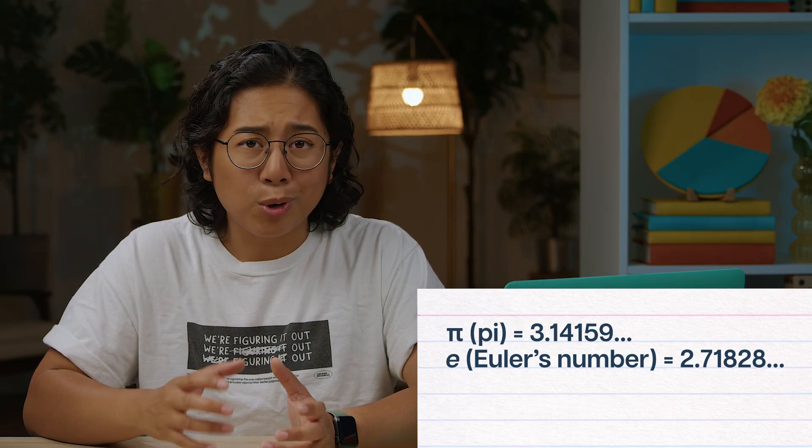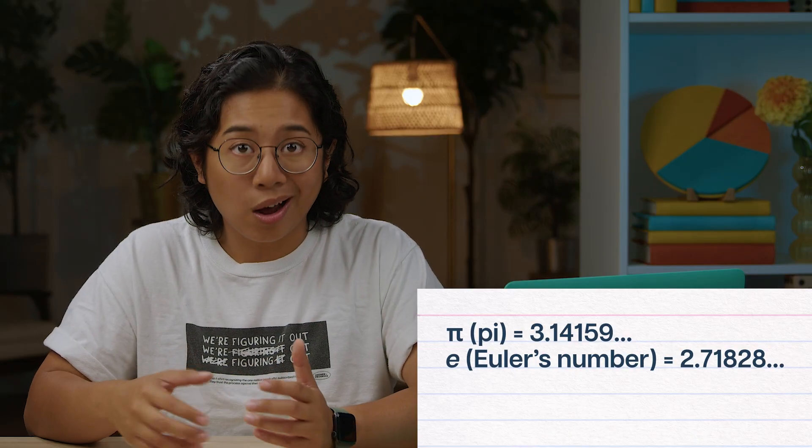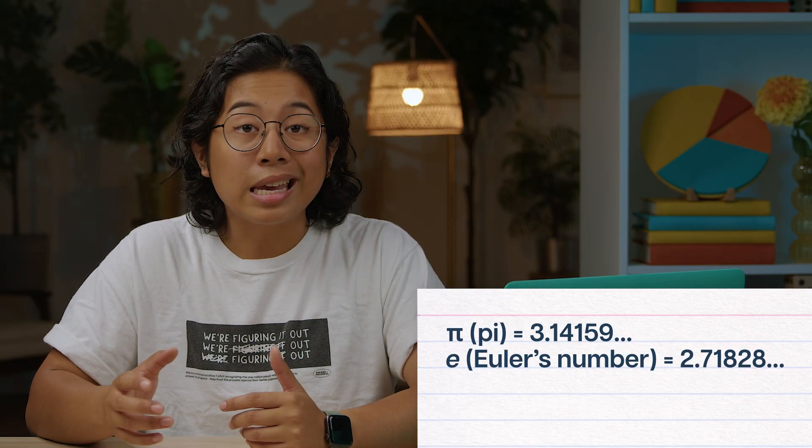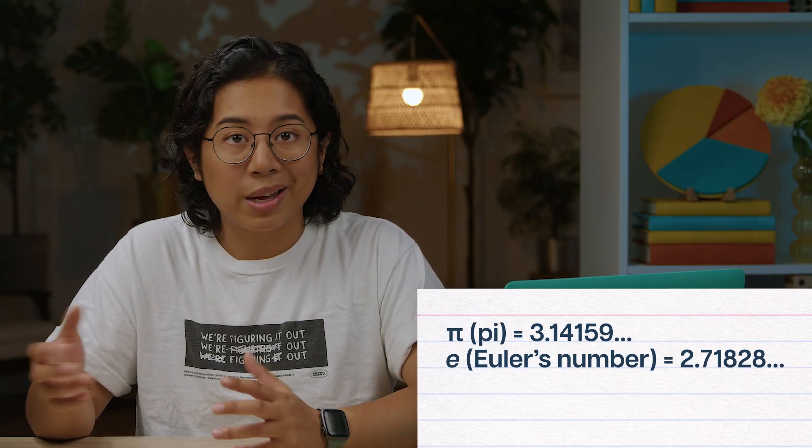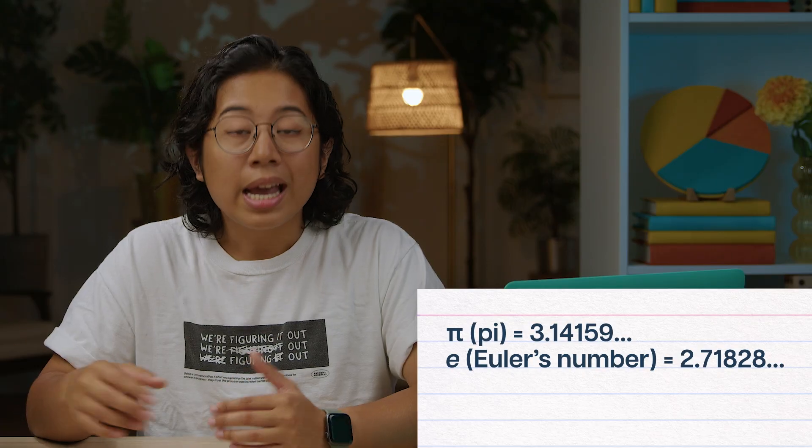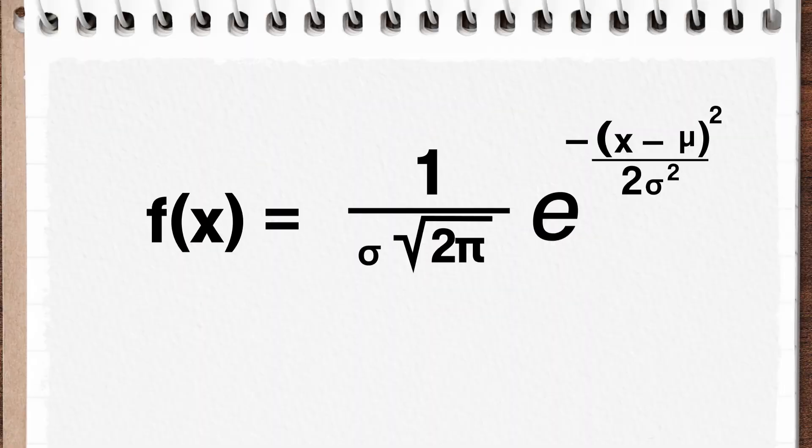Kind of like pi, E is an irrational number, or a decimal that goes on and on forever. So like pi is 3.14 and on and on, E is 2.718, et cetera. It's a mathematical constant that comes to us from calculus, where it plays a special role in functions with exponents, including the normal distribution.